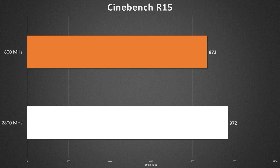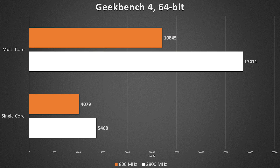First, with Cinebench, we see a roughly 10% performance decrease — but this is just the start. Don't worry folks, it gets much worse than this. Geekbench 4 takes things a step further; this is a more comprehensive benchmark, and we're beginning to see the effects of slow memory take hold.